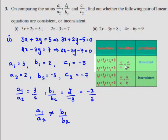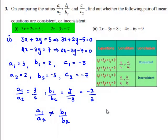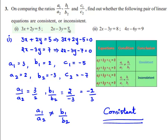By using the first condition if a1 by a2 is not equal to b1 by b2, we say that given set of linear equations are consistent. Therefore, the given equations 3x plus 2y equals 5 and 2x minus 3y equals 7 are consistent.